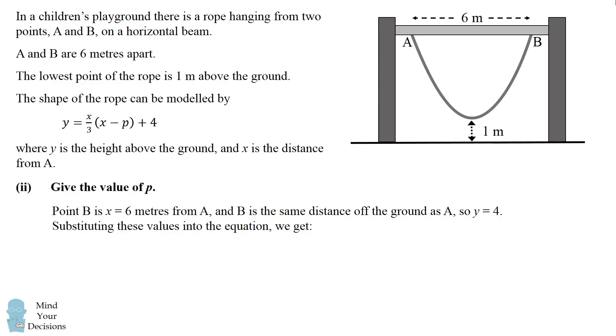Since A is 4 meters off the ground, that means B is also 4 meters off. So y equals 4. So we have 6 comma 4 as the values for B. Substituting these values into the equation, we get 4 is equal to 6 over 3 times the quantity 6 minus p plus 4.